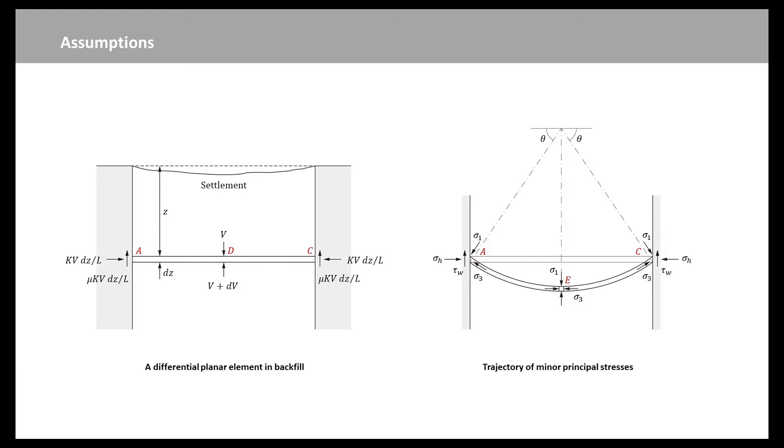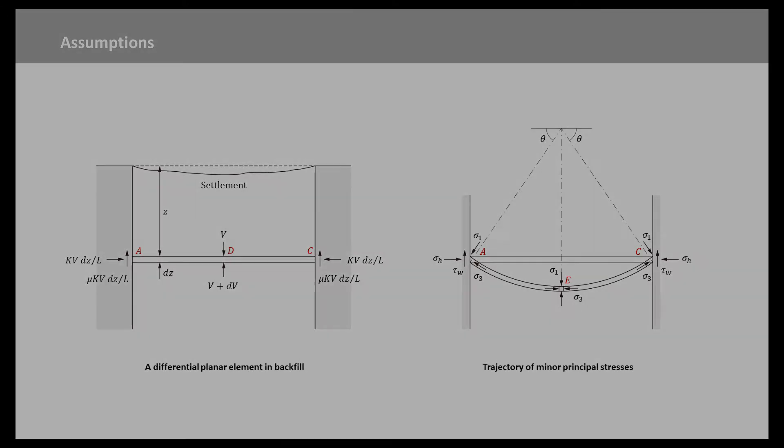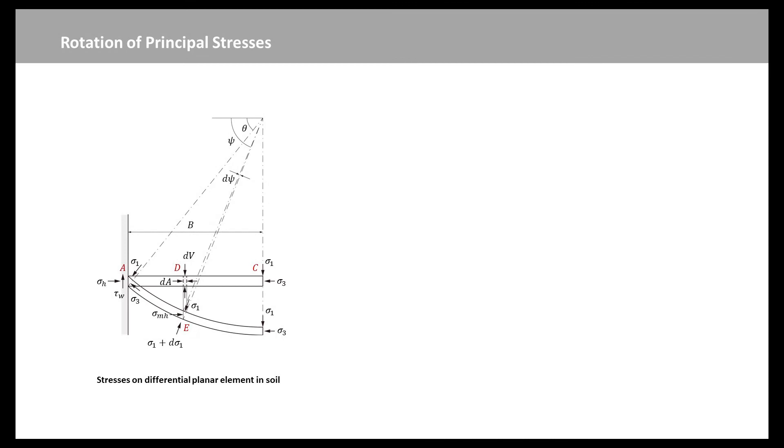As shown in the figure, the major principal stresses on the differential planar element are applied normal to the concave arch, while the minor principal stresses are tangential to the direction of the concave arch, becoming horizontal at the center of the element. Now, we cut the half of the planar element and see the directions of the major and minor principal stresses on the differential planar element are changed owing to the frictional resistance at the cut.